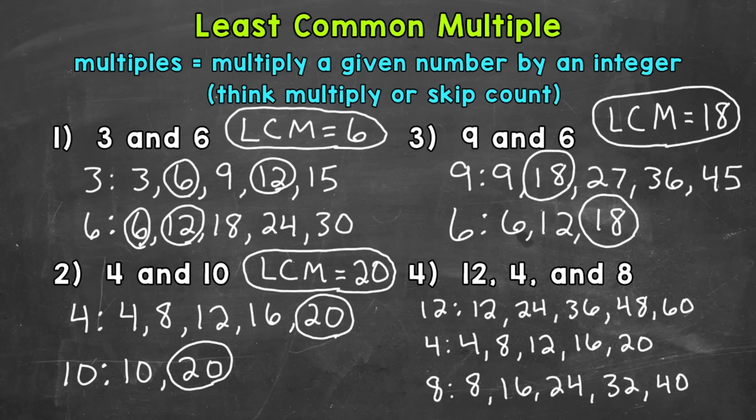So as we look at these lists, we do have some common multiples, but we don't have any common multiples between all three. And we need a common multiple between all three, and specifically the least common multiple. So what we can do, we can extend our lists until we find that least common multiple.